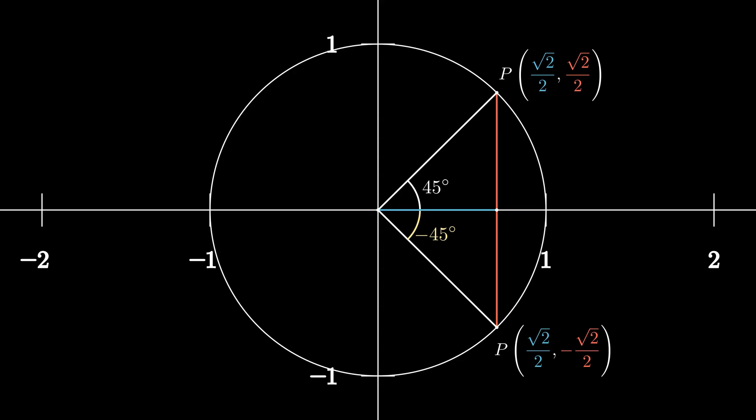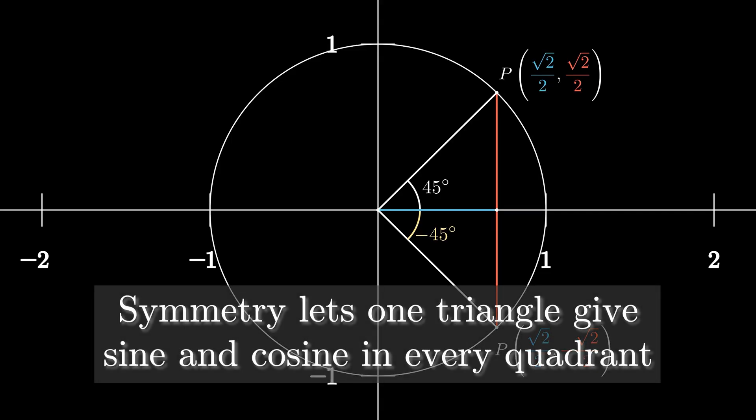This symmetry is what makes the unit circle so useful. It lets us use just a few known triangles to figure out values in every quadrant.